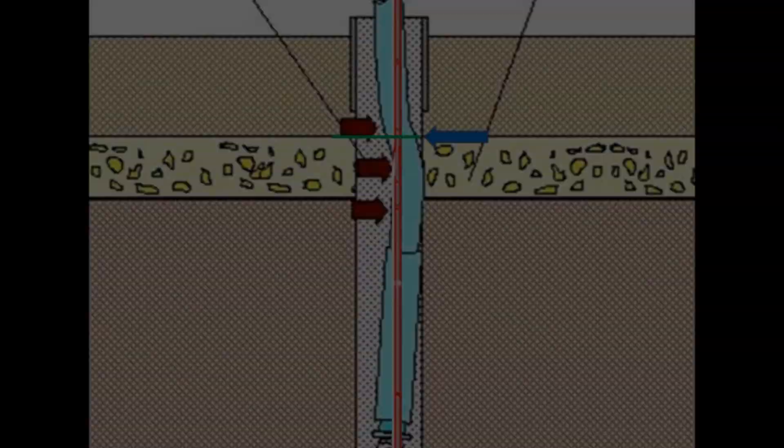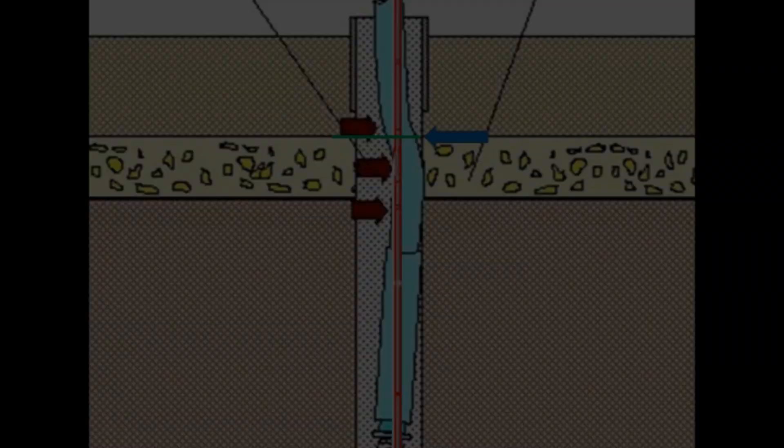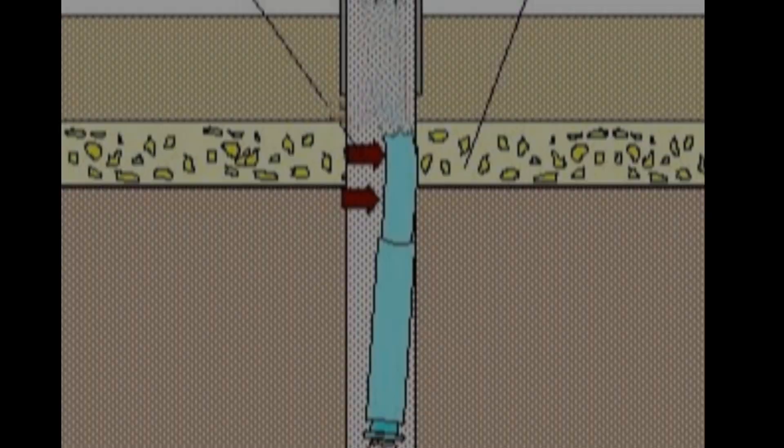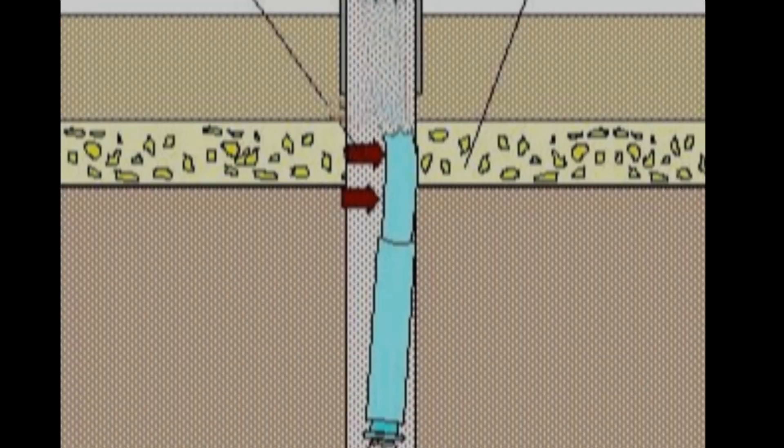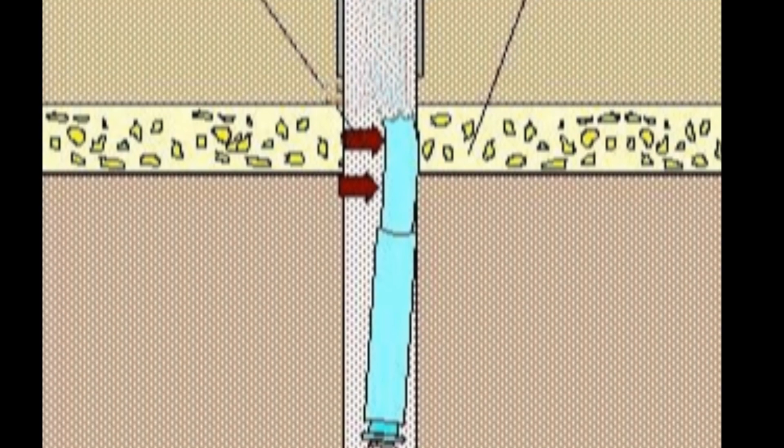Hoping that the explosion will rattle loose a coupling so that it can be unscrewed, the string is then carefully rotated counterclockwise in an attempt to break the rattled coupling. Once unscrewed, the string is pulled out leaving the fish or bit and the stuck part of the drill pipe still in the hole.